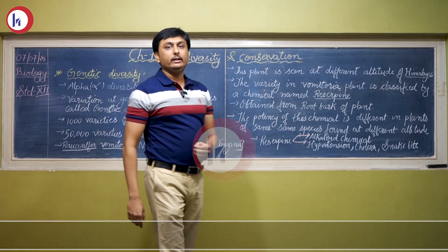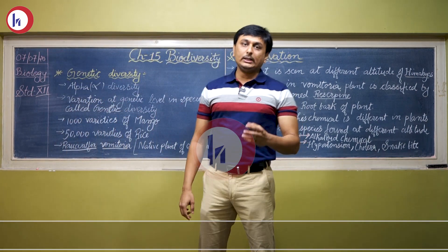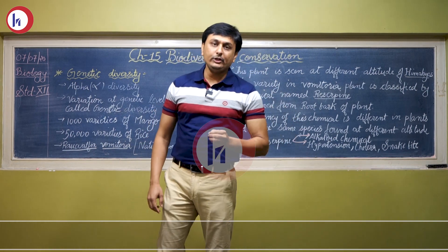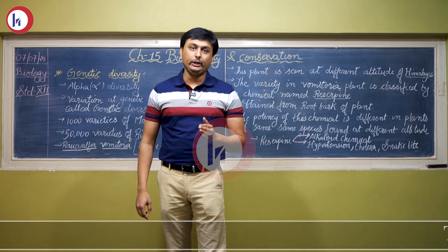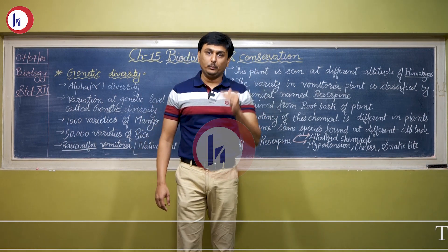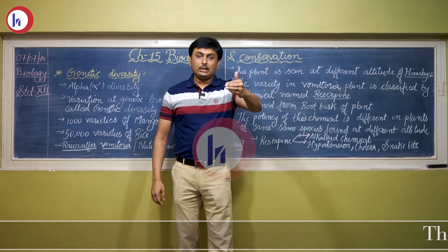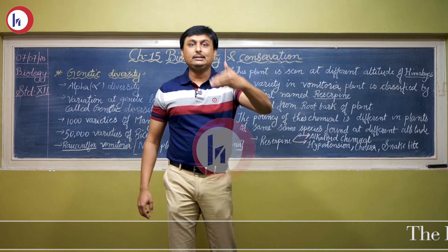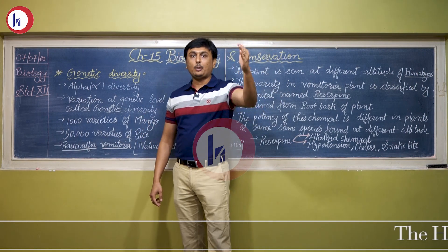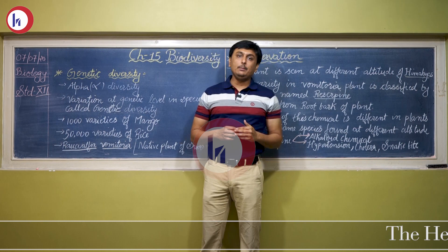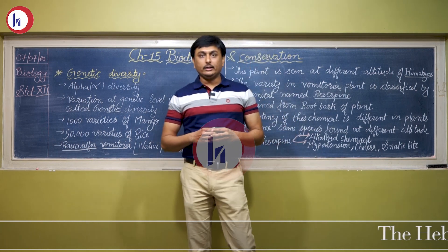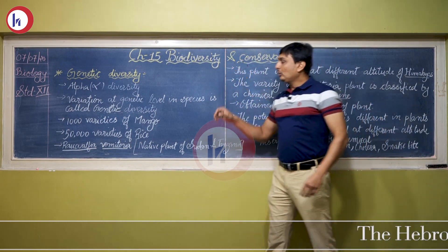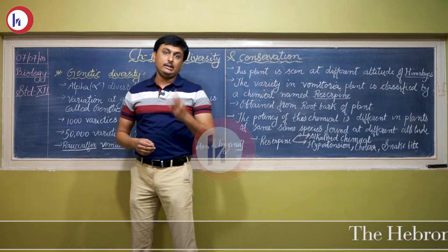As we studied earlier, you can study diversity at different levels of organization, starting from macromolecules all the way to biomes — from macromolecules, organelles are formed, then cells, tissues, organs, organ systems, organisms, populations, and biomes. But here in this chapter, Biodiversity and Conservation, we are going to study diversity at three different levels.